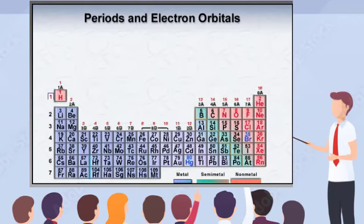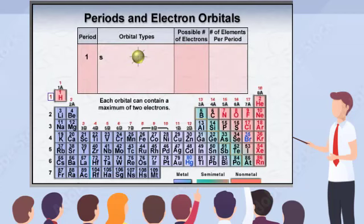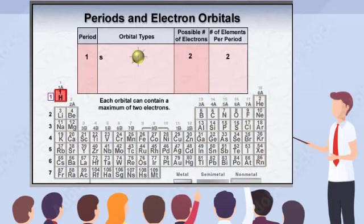The first energy level has a single S orbital. Each orbital can contain a maximum of two electrons, so period one contains only two elements, hydrogen and helium.